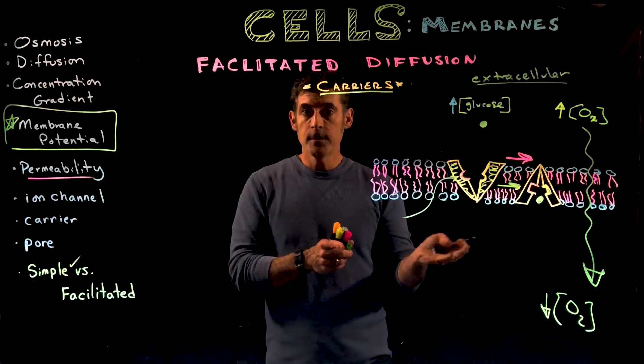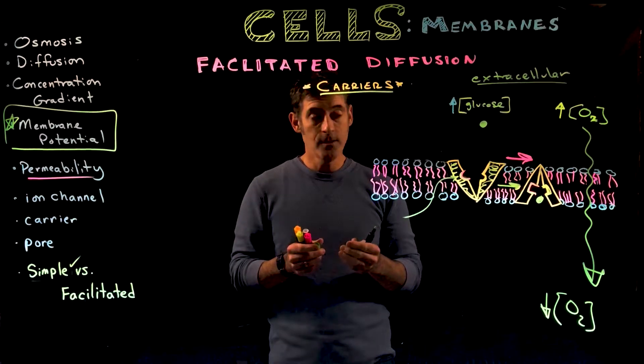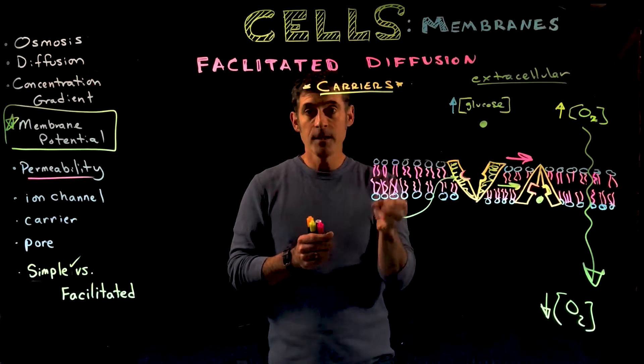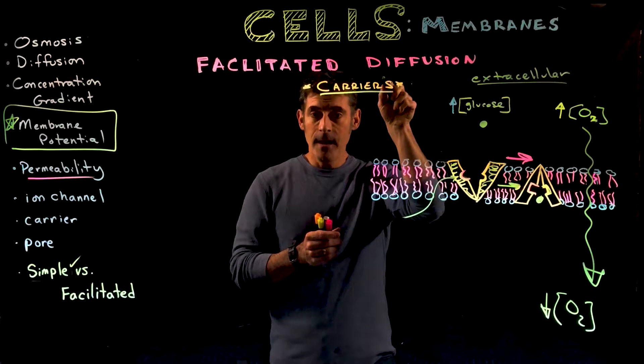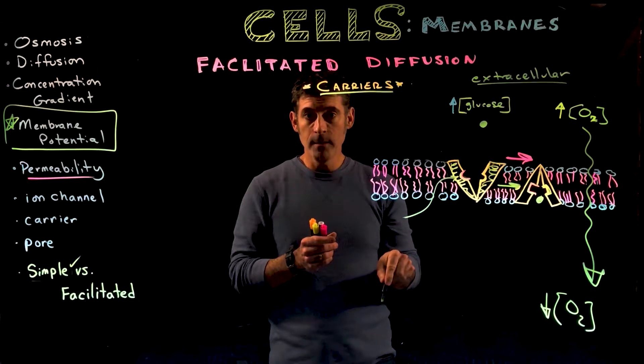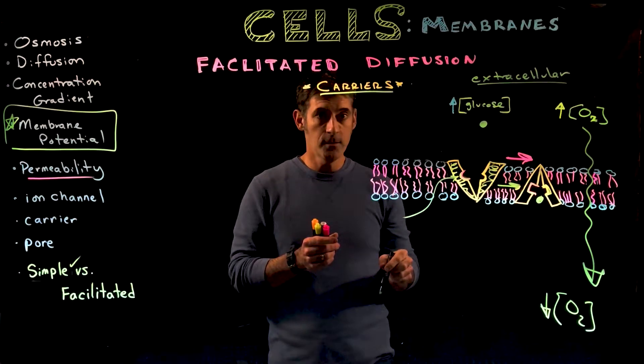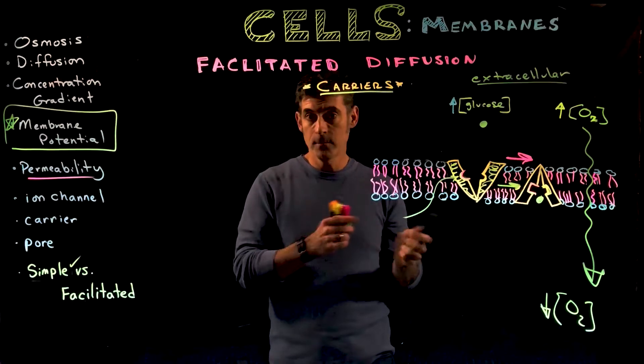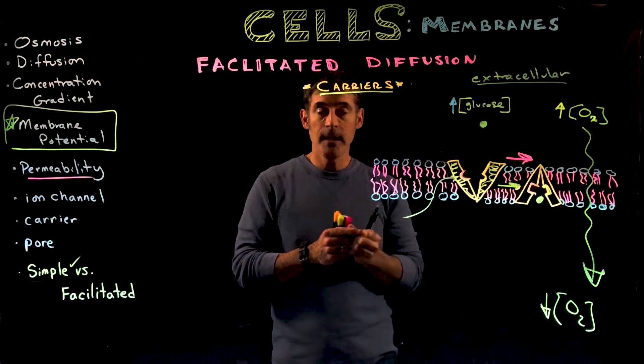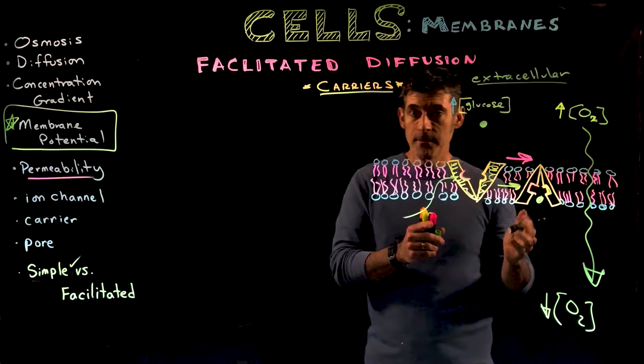With facilitated diffusion, we use a protein. In a previous lecture, we looked at ion channels, which are fairly static. The ion moves across the membrane along its gradient from high to low concentration. Channels could have gates that change shape and open and close, but the channel itself doesn't change.